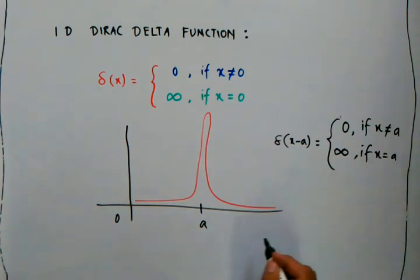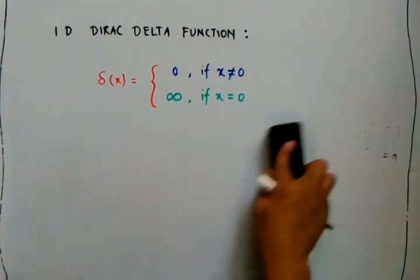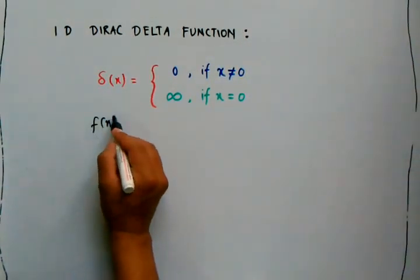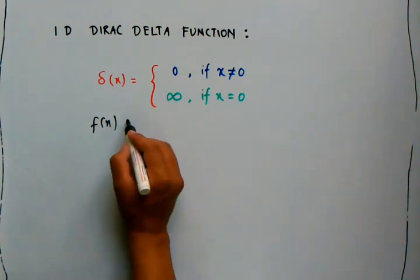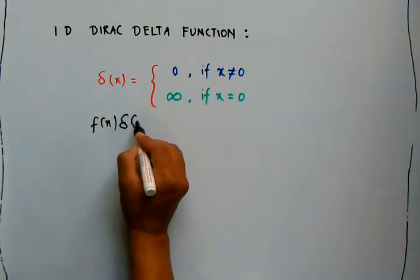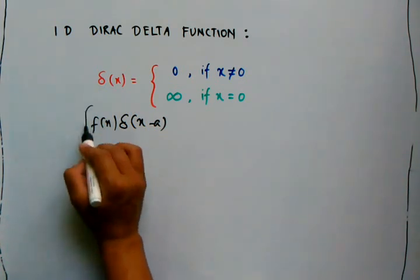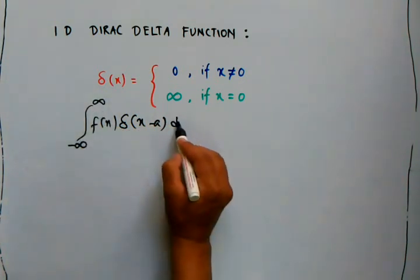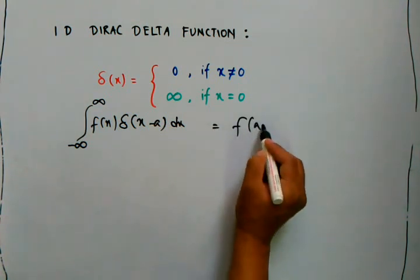Similarly, if we take any function f(x) and multiply it with the shifted Dirac delta function δ(x − a), then integrate it from minus infinity to infinity, we get f(a).